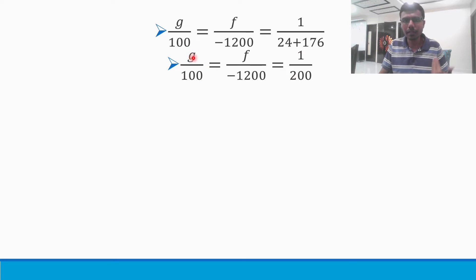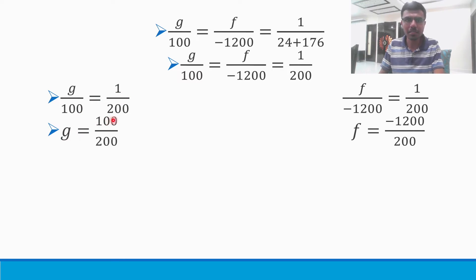Now you know I could equate it like g/100 = 1/200, and f/(-1200) = 1/200. I can split it because all three of them are equal. Now send this 100 here. g is 100/200 and f is -1200/200.